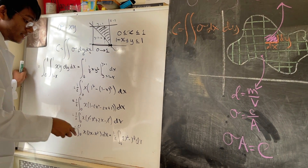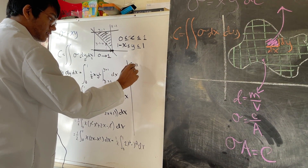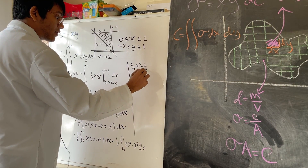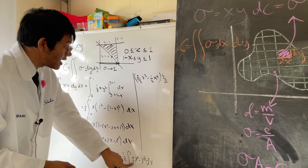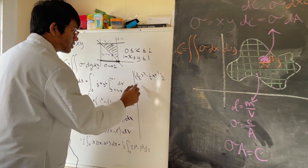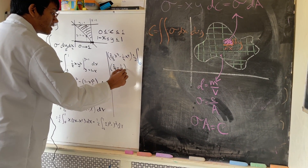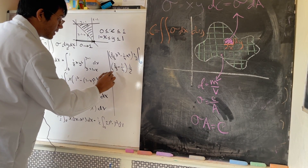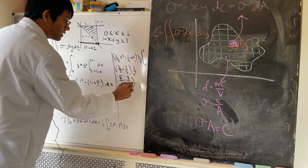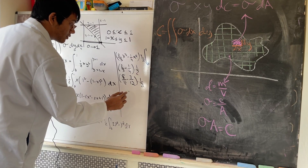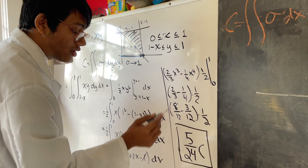Now just basic integration: the antiderivative of 2x squared minus x cubed is two-thirds x cubed minus one-fourth x to the fourth. Multiplying by the factor of one-half and evaluating from 0 to 1 gives one-half times (two-thirds minus one-fourth). That equals one-half times five-twelfths, giving a final answer of 5 over 24 coulombs — that's the total charge on our triangular region.